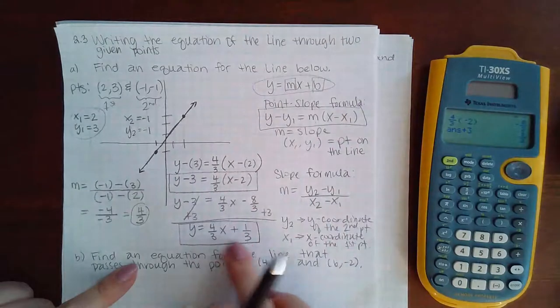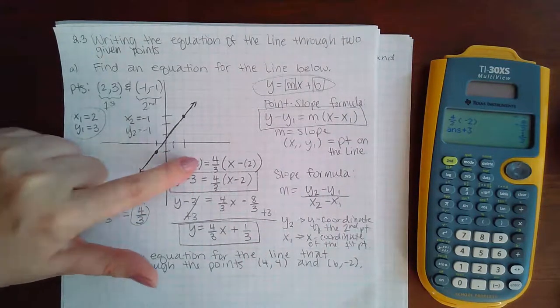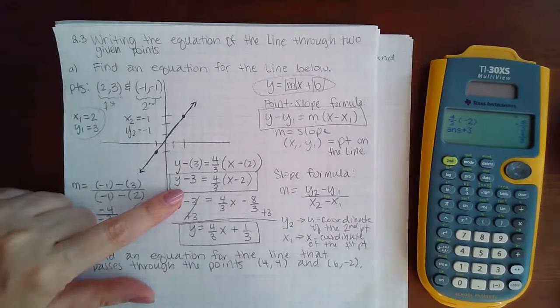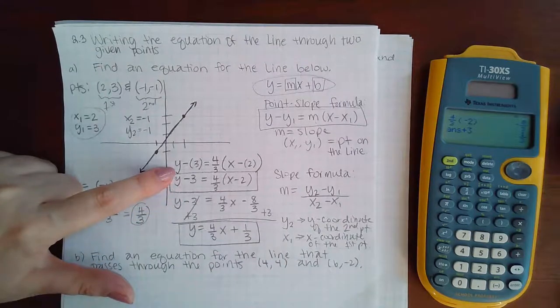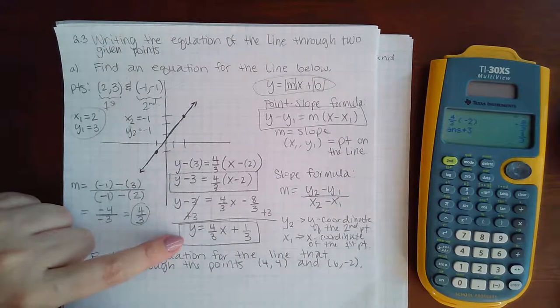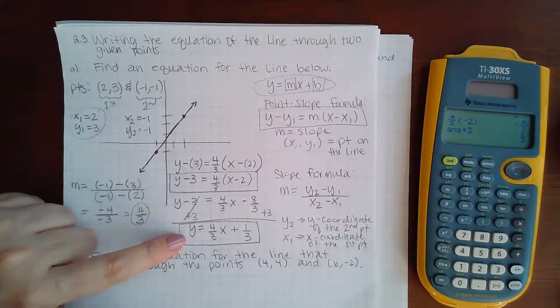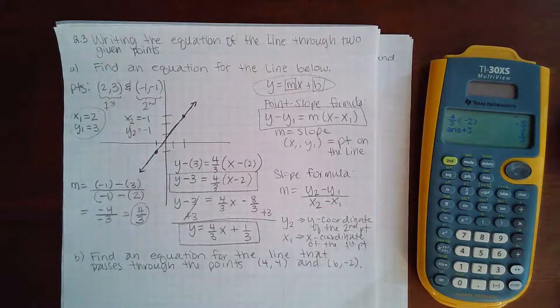And so this is the slope-intercept form of the line. Now, as soon as I kind of double-parentheses around the signs, I could have typed this as my answer and Alex would have accepted it. It would have even accepted this, but for formality purposes and for future purposes, it's always best to have it in the slope-intercept form.